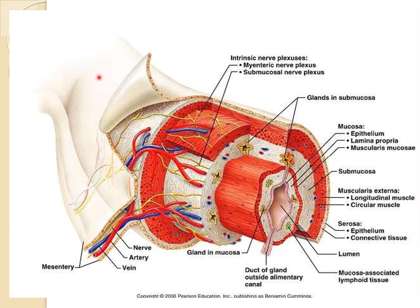Different parts of the GI tract are specialized for carrying out different functions — digestion, absorption, excretion of waste materials, fluid and electrolyte balance, providing immunity, and hosting the bacterial flora. For conducting all these functions, different parts of the tract are present, and all these different parts share basic structural characteristics.